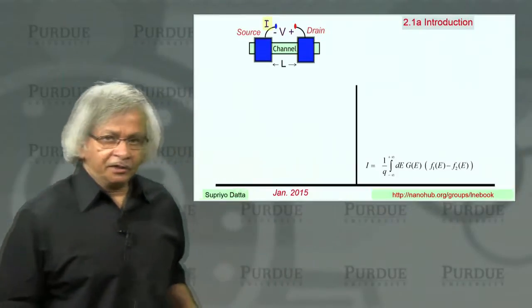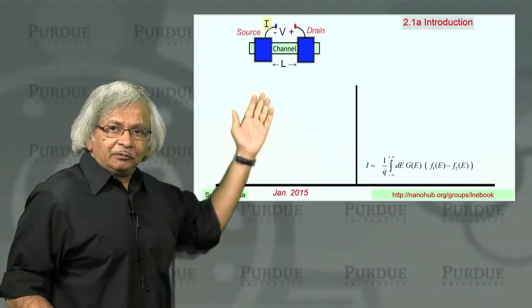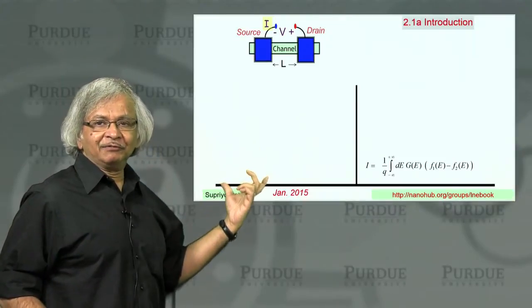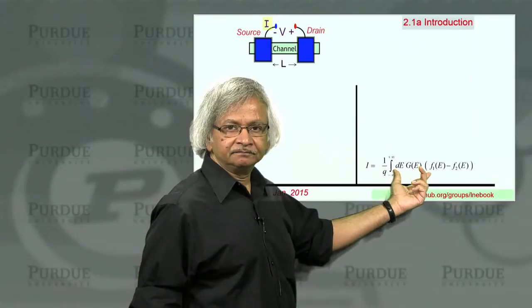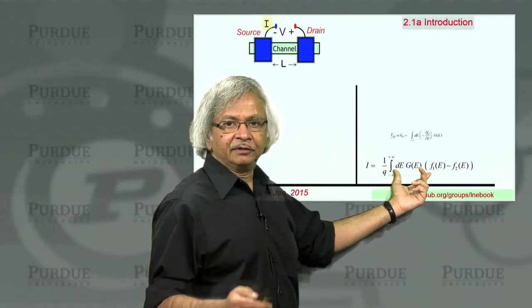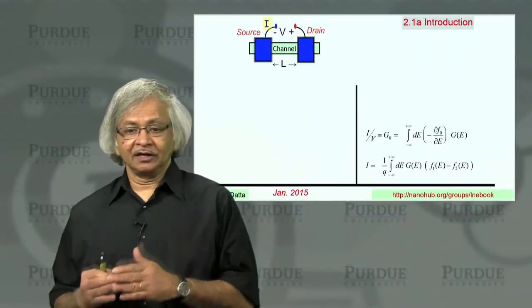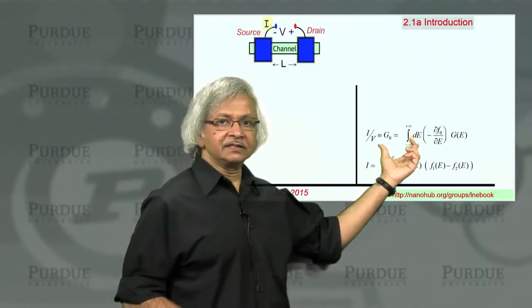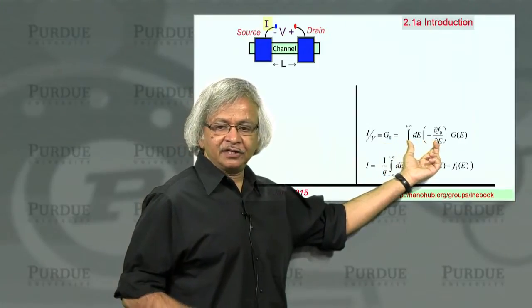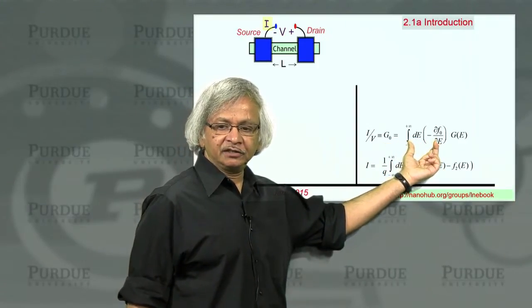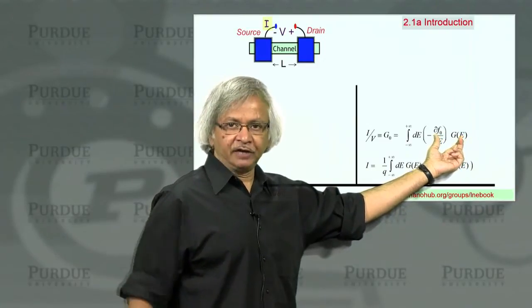Just to remind you what you were doing earlier, we considered the small device and wrote down the expression for current, and then linearized it to get an expression for conductance. The conductance is like this energy average around the chemical potential of the conductance function, which is a function of energy.